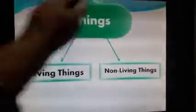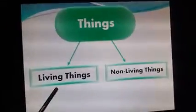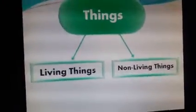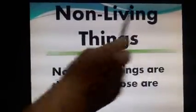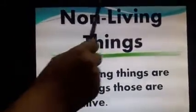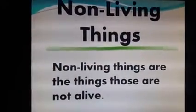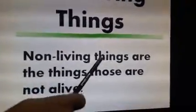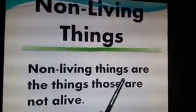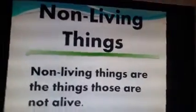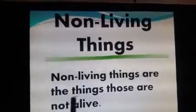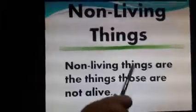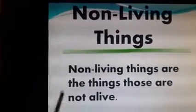Say this part orally — you will say with me: living things, non-living things. Today we learn about non-living things. Say with me loudly: non-living things. Now, whom should we call non-living things? Non-living things are the things that are not alive. Those that have no life are called non-living things. Non-living things are the things that are not alive.